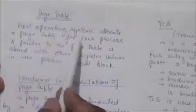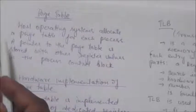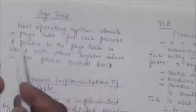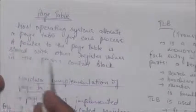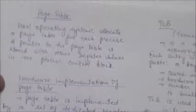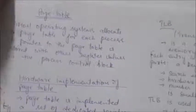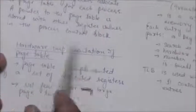Most operating systems allocate a page table for each process. A pointer to the page table is stored with other register values in the process control block.